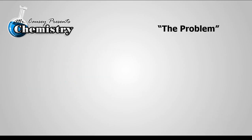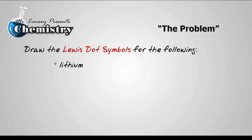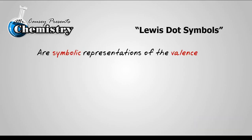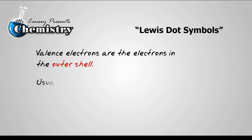The problem: Draw the Lewis dot symbols for the following: lithium, nitrogen, aluminum, and chlorine. Now we want to remember Lewis dot symbols are symbolic representations of the valence electrons in an element. And valence electrons are the electrons in the outer shell, usually the s and the p orbitals.